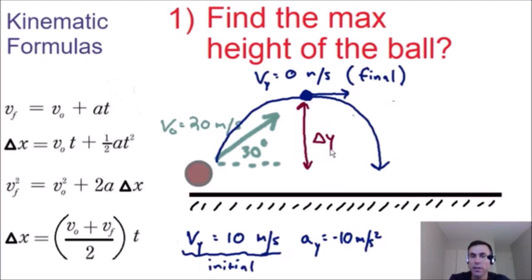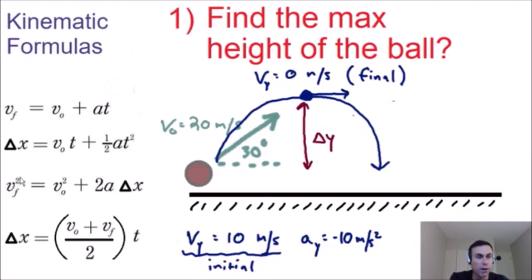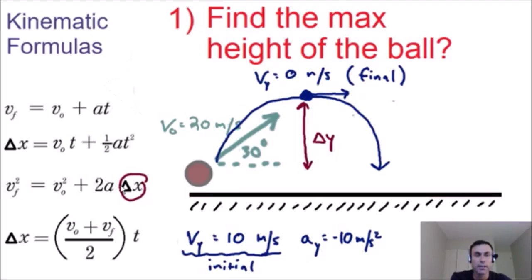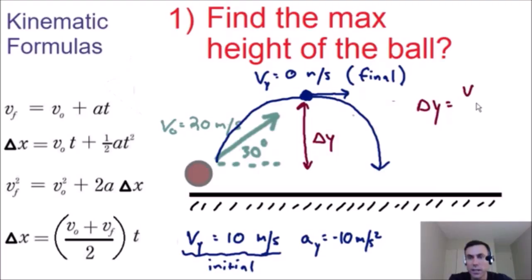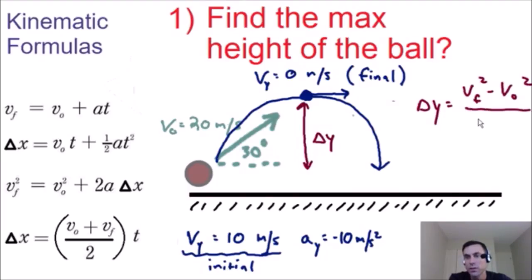We're going to use the third kinematic equation, because we have the final velocity, initial velocity, and acceleration in the y direction, and we need to find delta y. The equation is: delta y equals (vf² − vi²) divided by (2 times acceleration in the y direction).